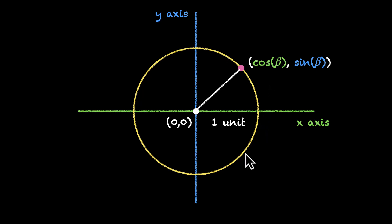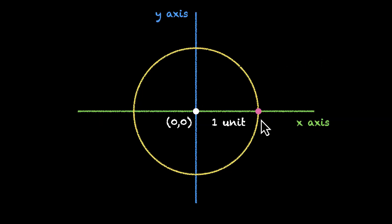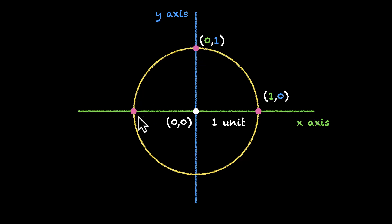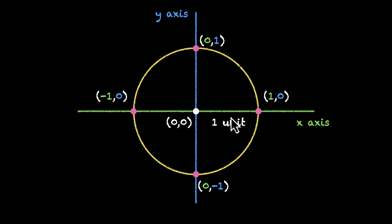So now let's use this to find the coordinates of some special points. This point has coordinates 1, 0 — the x-coordinate is 1 and the y-coordinate is 0. This line makes 0 degrees with the x-axis, so we know cos of 0 and sine of 0. Cos of 0 is 1 and sine of 0 is 0. So next time you're forgetting which one's which, try imagining the unit circle.